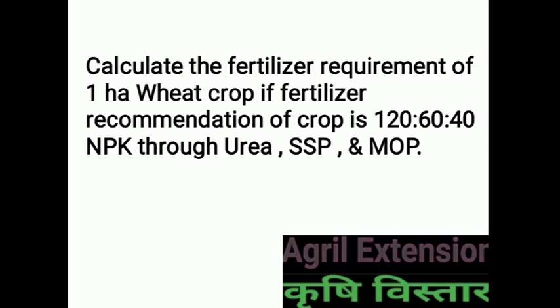Suppose we are taking the wheat crop and the recommended dose is 120 kg of nitrogen, 60 kg of phosphorus, and 40 kg of potassium. This fertilizer we can provide through Urea, SSP, and MOP.